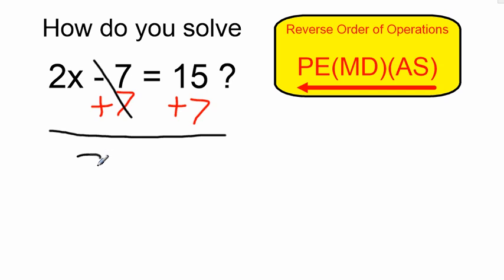On the left it cancels, leaving me with 2x. And on the right, 15 plus 7 is equal to 22.